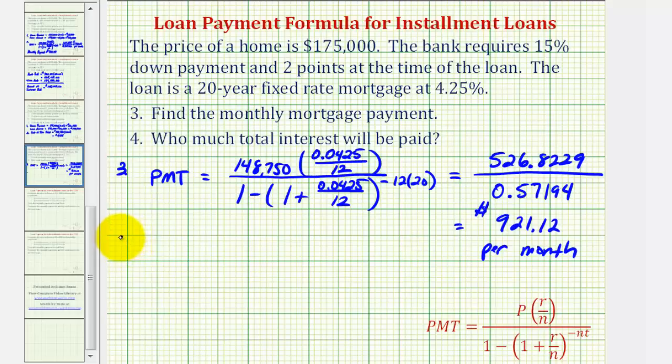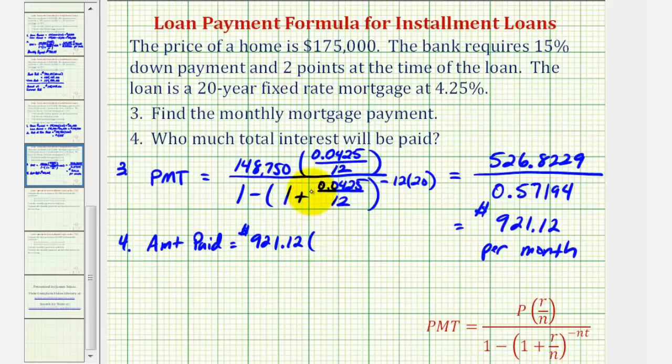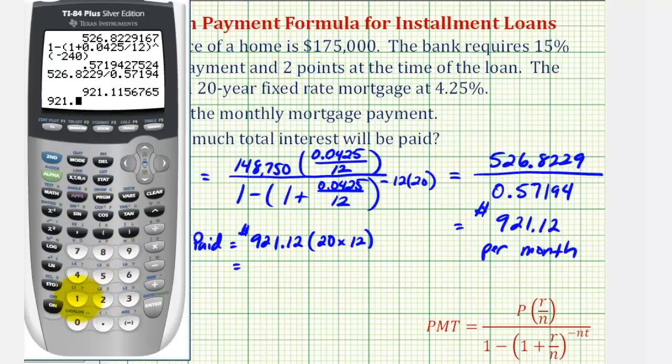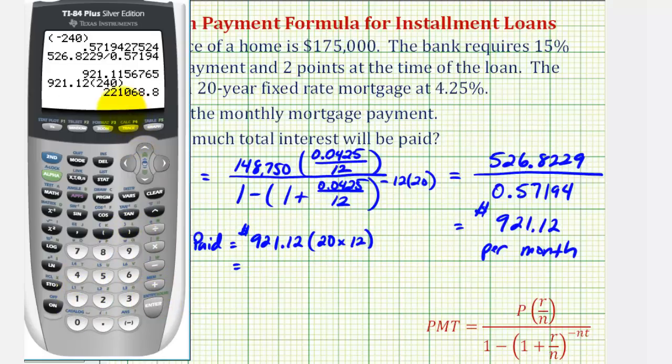Now for number four, we want to determine the total interest paid for this loan over the 20-year period. So to do this, we'll first find the total amount paid and then subtract the loan amount. The amount paid over the 20 years is going to be the monthly payment, 921 dollars and 12 cents, times the number of months, which is 240. So 221,068 dollars and 80 cents.